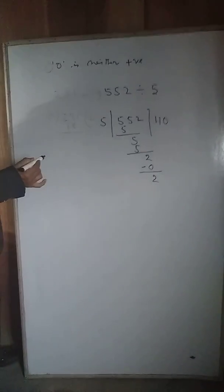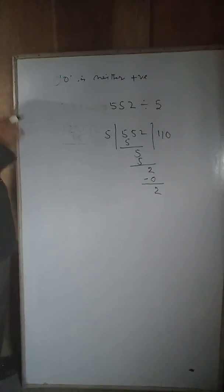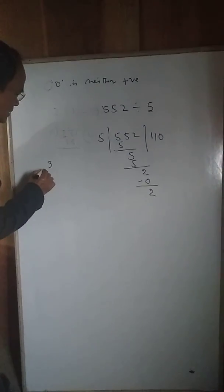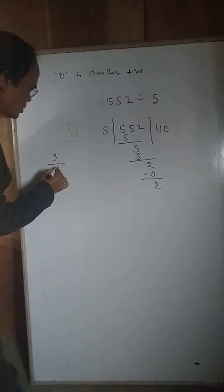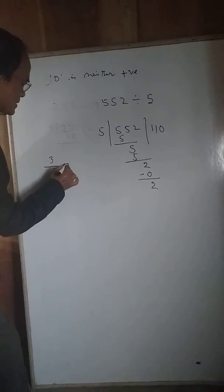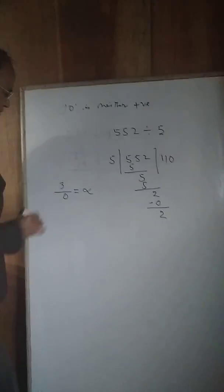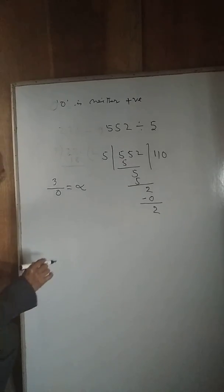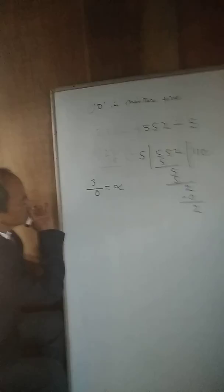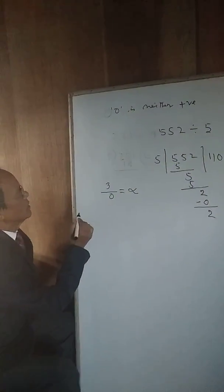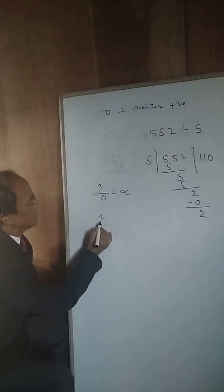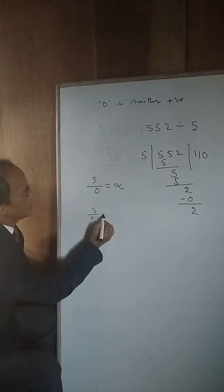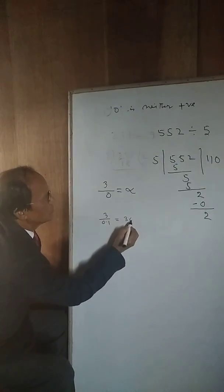Let us discuss another proof. Say a positive number is divided by zero. It is undefined, that means infinity. Let us prove this. 3 is divided by 0.1, this is 30.